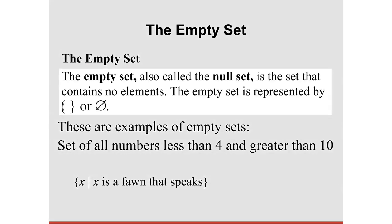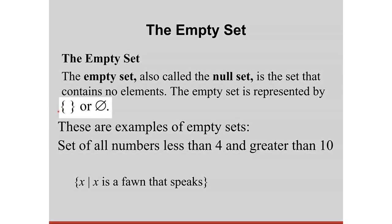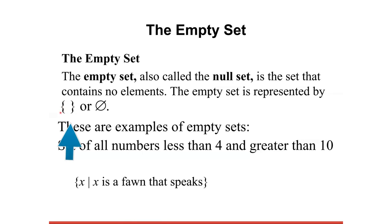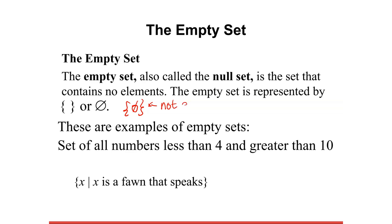Now let's discuss the empty set, also called the null set. This is the set that contains no elements. We use two symbols to denote the empty set: a pair of braces with nothing inside, or the symbol ∅ (a circle with a line through it). Take note that when you see the symbol ∅ placed inside braces like {∅}, this is a non-empty set — it is a set with one element, and that element is the empty set itself.